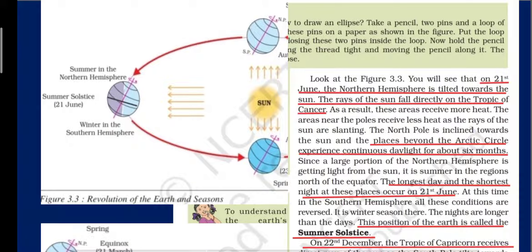Good afternoon, children. Today we will read about the revolution of the earth that causes seasons, about solstice and equinox. I have cropped figure 3.3 and pasted it here for convenience so that we don't have to go back and forth to the next page. Let us now quickly start reading the lesson.